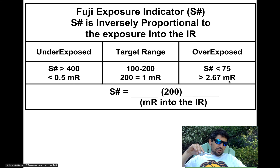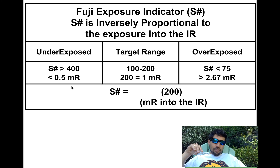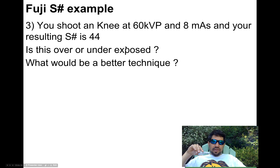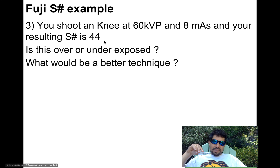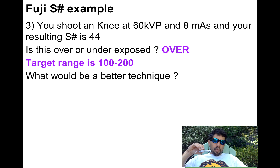Overexposed means your S number is less than 75 — that would mean more than 2⅔ MR. Underexposed means a big number: if my S number is up at 400, I'm shooting less than half an MR through the plate. That's not enough exposure to get a good image. I need more technique. Let's look at some math: you shoot a knee at 60 kVp and 8 mAs, and your resulting S number is 44. Is it over or under? It's inversely proportional, so low numbers are high dose — that's overexposed. My range is 100 to 200, and I shot a 44.